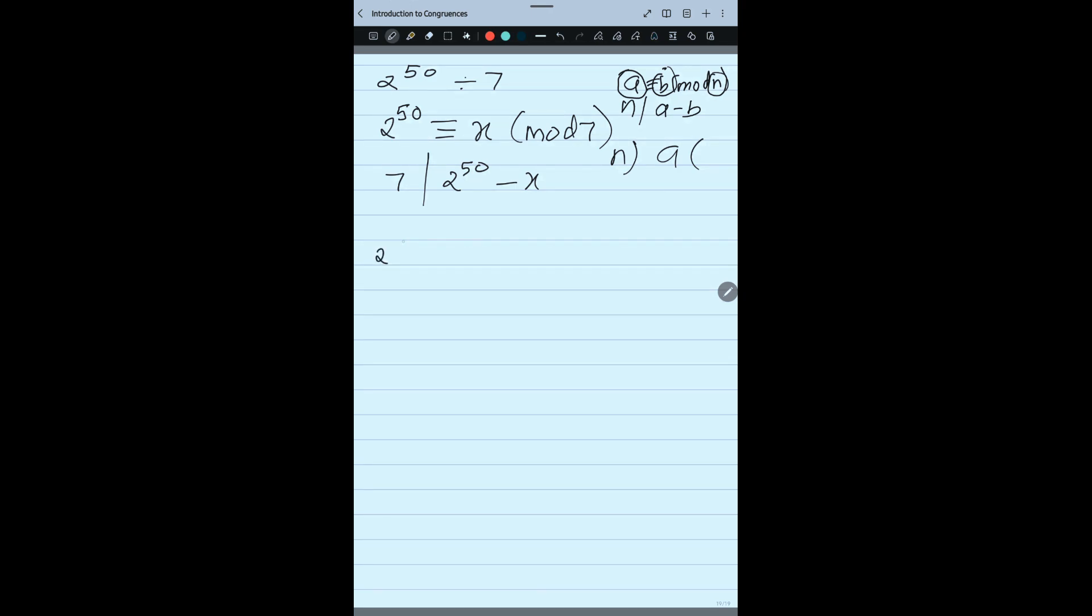So most of the time I will be using the exponent properties. Now let us see quickly. Let me try to split 2 to the power 50. Now 2 to the power 50, first let me start with 2 to the power 5. Can I write like this? I want to reach 250. So I am starting with 2 to the power 5, right? Now 2 to the power 5 I wrote like this. What is 2 to the power 5? 32 congruent x mod 7.